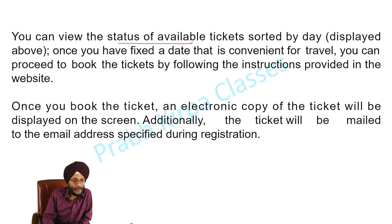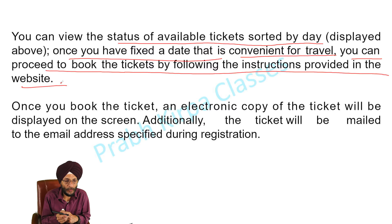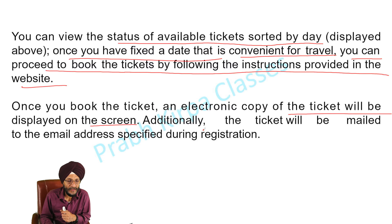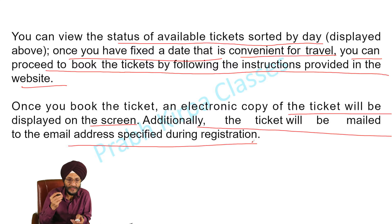You can also view the status of available tickets sorted by day. Once you have fixed a date that is convenient for travel, you can proceed to book the tickets by following the instructions given on the site. Once you complete the booking, an electronic copy of the ticket will be displayed on the screen. At the same time, a copy of the ticket will also be mailed to the email address you mentioned during the registration process.